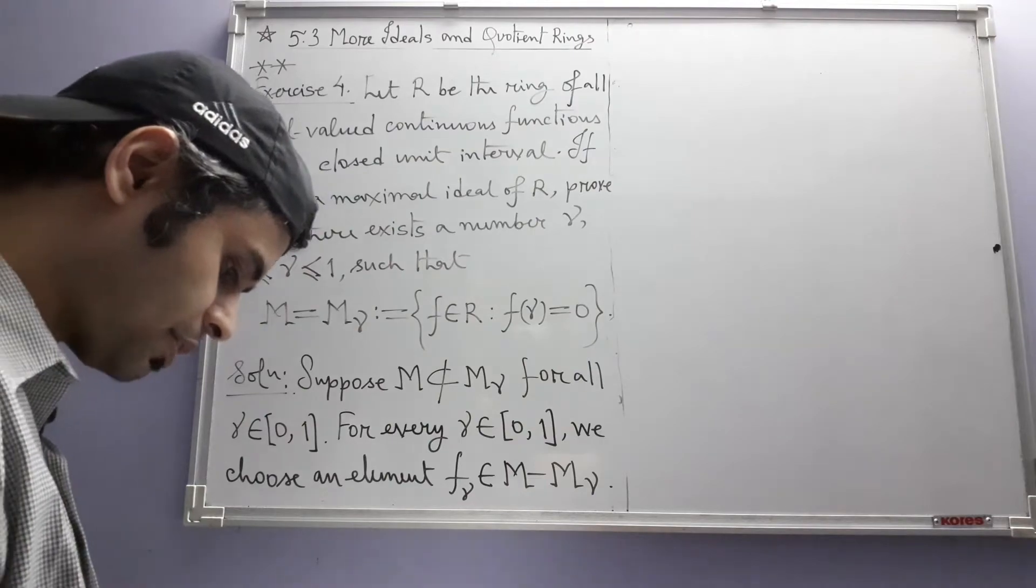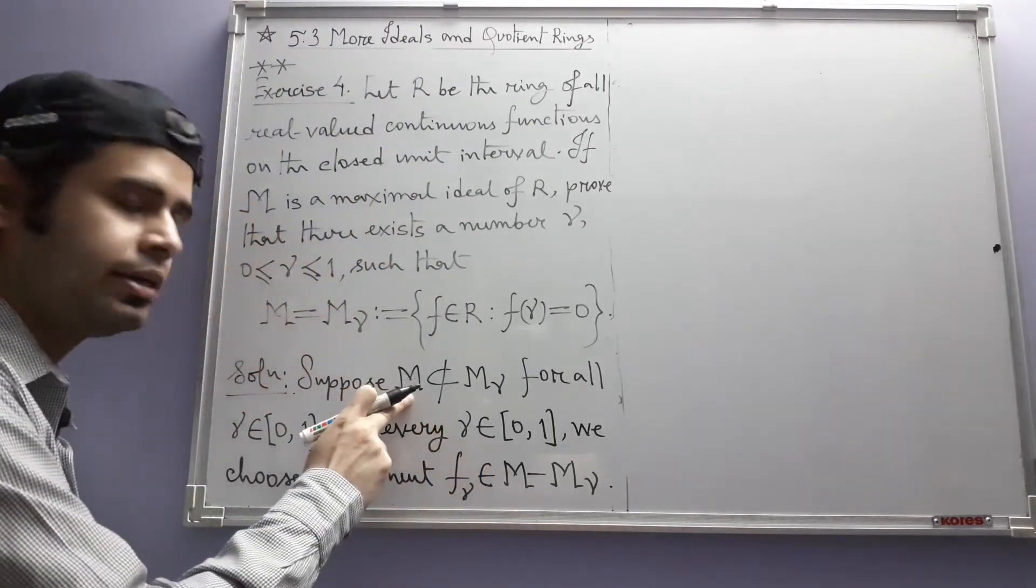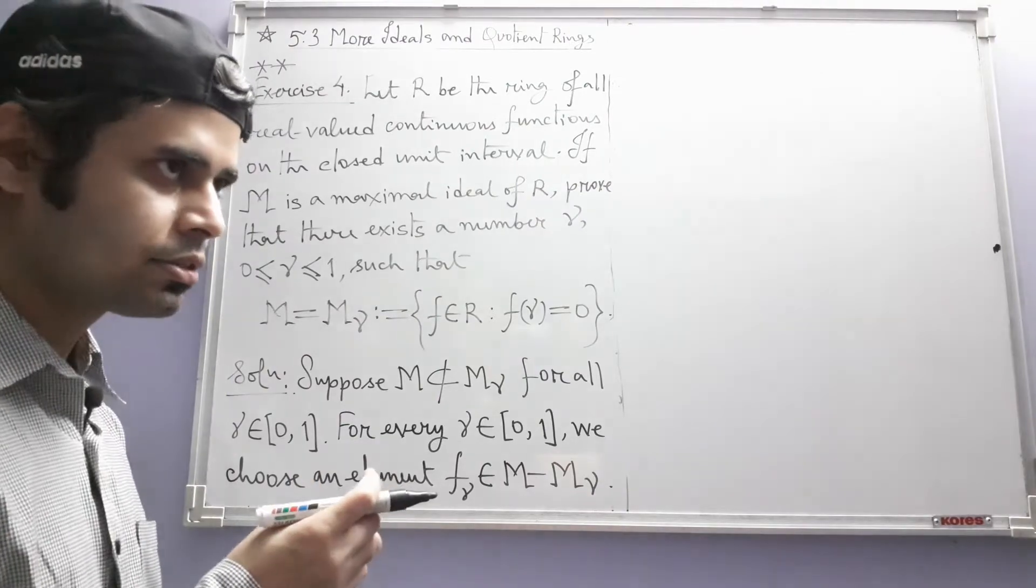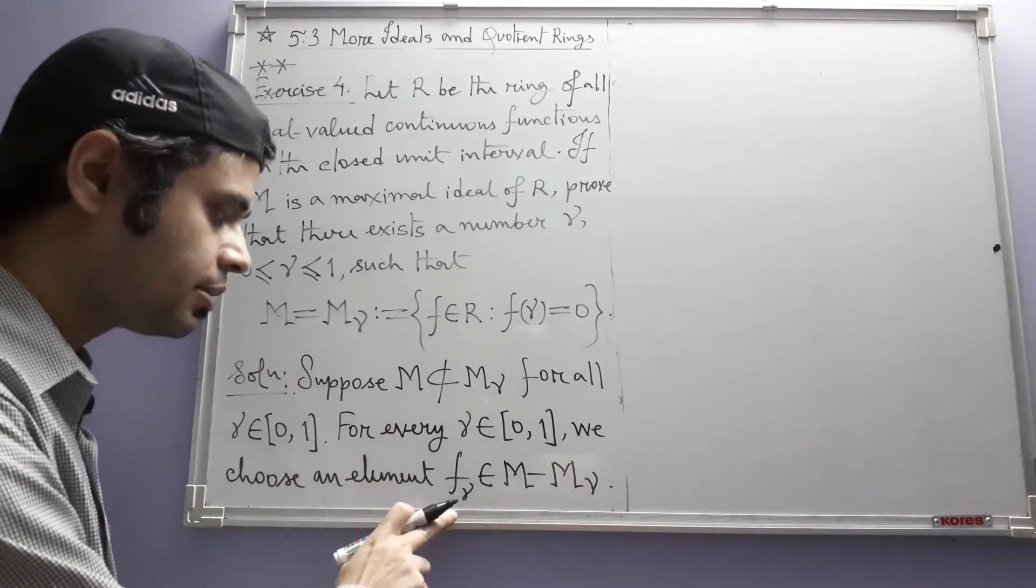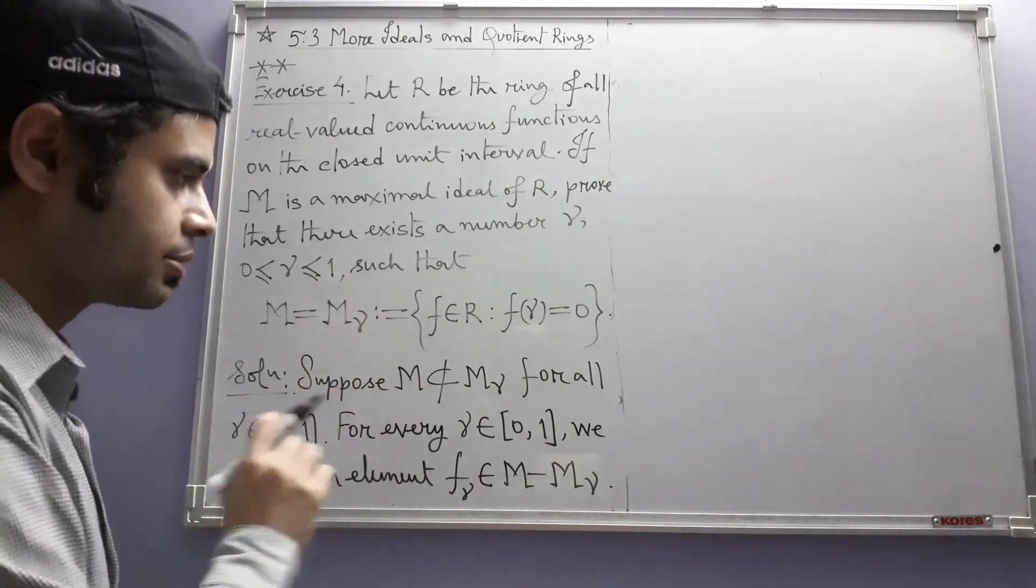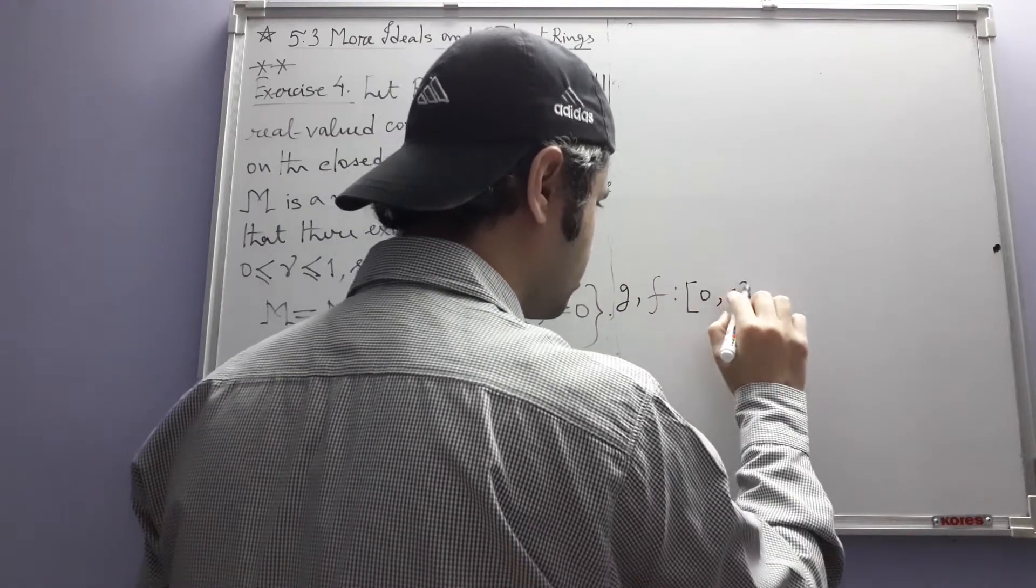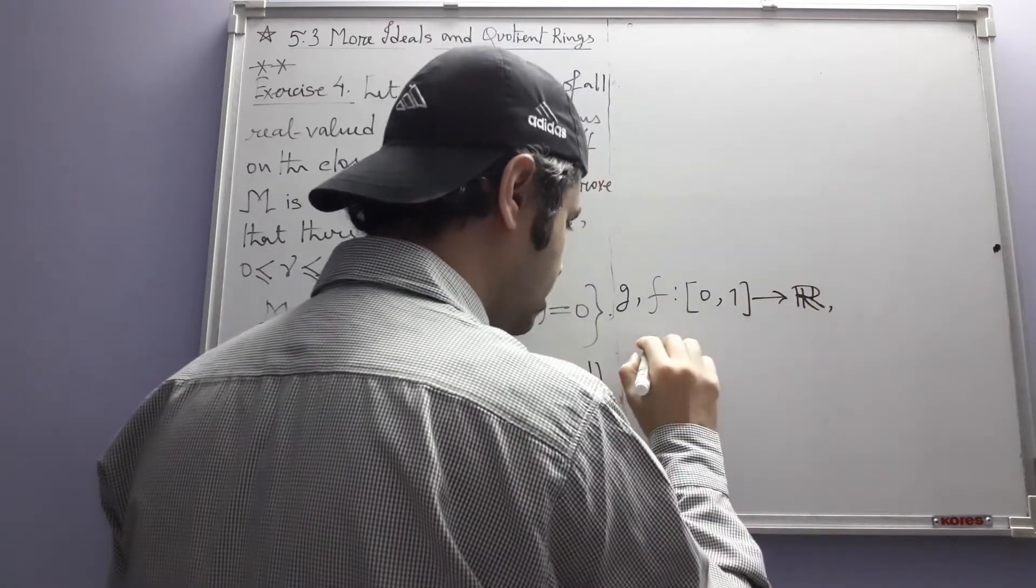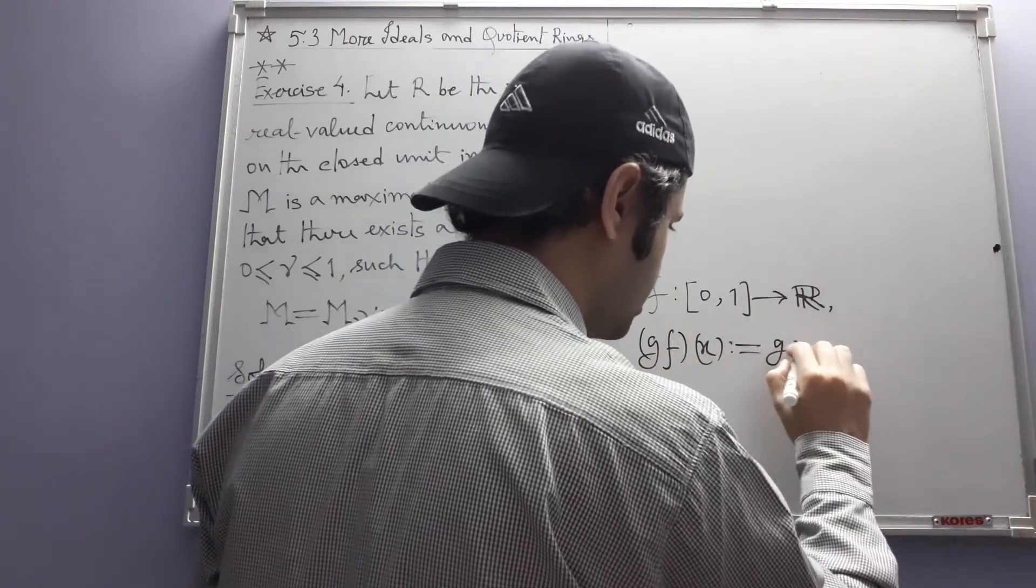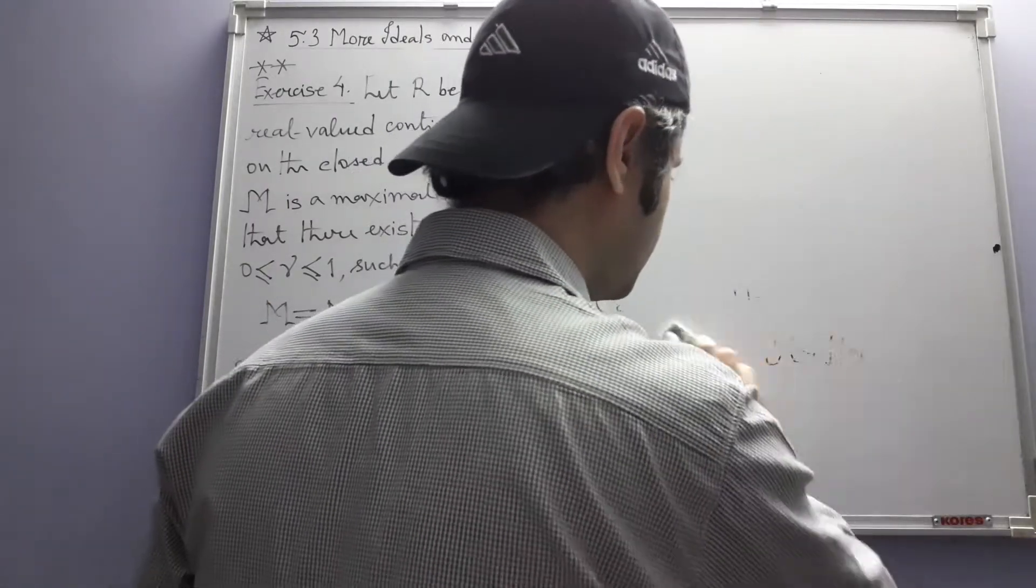So then next, what we get from this. Now note that f_gamma is after all in the ideal m. So if I multiply f_gamma with itself, the multiplication being the ring multiplication, multiplication of two functions. Keep in mind that the multiplication we have in this ring is not composition of functions. It is just pointwise multiplication. If we have two functions, say g and f, then their product is defined like this: at any point x in [0,1], the value is the product of their values at x. That multiplication.